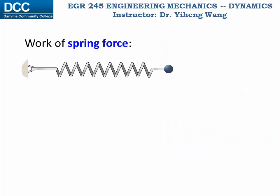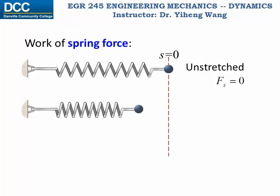When a particle is attached to a spring and the spring is unstretched, the particle is at the neutral position s equals zero, and the spring force is zero. At state one, if the spring is compressed, the position of the particle is s1, measured from the neutral position pointing to the left. Because the spring always wants to restore its original shape, it exerts a force pushing the particle to the right, with magnitude negative k times s1 — the negative sign indicating the force acts opposite to the displacement.